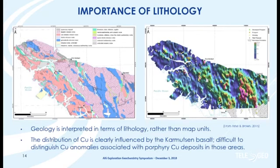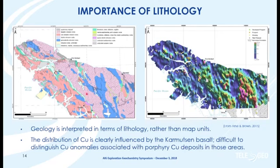One of the major controls on regional stream sediment data is going to be lithology. Once we have a catchment we have a polygon, so we can query different layers in GIS. We don't want to query formations because that doesn't give us lithological information, so quite often we'll do a simplified lithology classification. For northern Vancouver Island — a known porphyry copper-gold mining district — one of the big problems in interpreting copper data is this pink-stippled unit, the Karmutzen basalt. A percentile gridded image plot of the raw copper shows a very strong control on the copper distribution from the basalt.